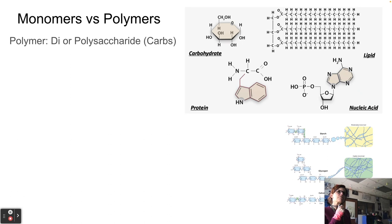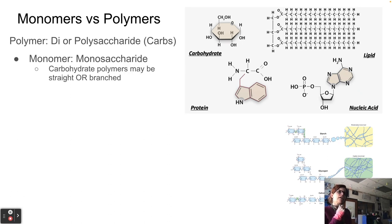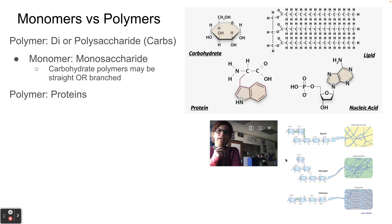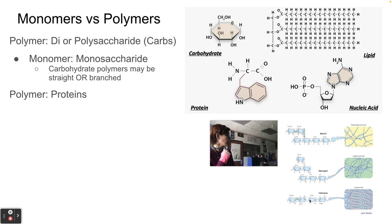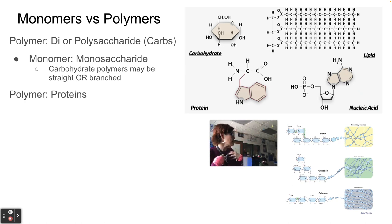Di- or polysaccharides are polymers for carbohydrates; the monomer is the monosaccharide. Carbohydrate polymers can be straight or branched — cellulose and starch are typically straight, whereas glycogen is a branched version. All three — cellulose, starch, and glycogen — are made of glucose. The difference between starch and cellulose: in starch, all the glucose molecules are upright; in cellulose, they're rotating. We have the enzyme for digesting starch but not for digesting cellulose, which has the same energy content but we can't access it.